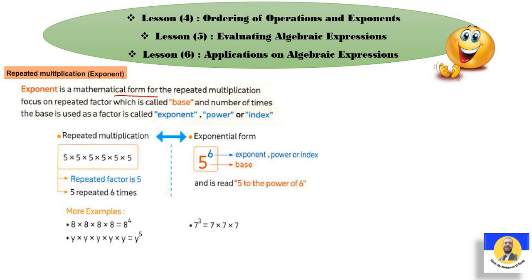لو أنا معي Repeated Multiplication زي 5 × 5 × 5 × 5 × 5 × 5، فنشوف الـ5 حصلها Repeated 6 times. فبدل ما أخليه على شكل Repeated Multiplication، نعمله Exponent Form. وتكون 5 to the Exponent 6. الـ5 هي الـBase، اللي هي الـNumber اللي بيحصله Repeated. والـ6 اللي فوق هي Repeated How Many Times. فبنسميها 5 to the Exponent 6 أو 5 to the Power of 6.